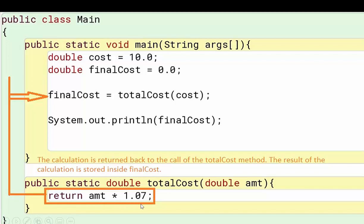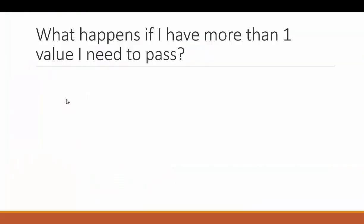that's going to be stored inside finalCost because here I have finalCost set to equal totalCost, which is when I call my method, I pass down cost, which is 10.0. That goes into amount. I'm doing 10.0 times 1.07 and that's being returned back to finalCost and it's going to be stored in finalCost.